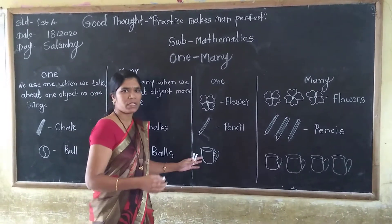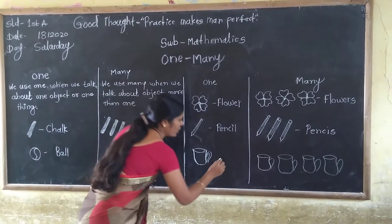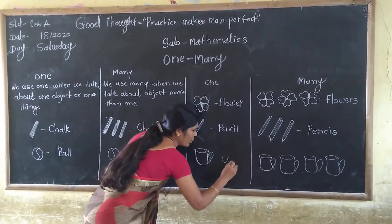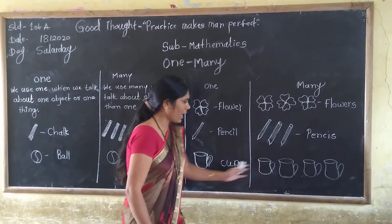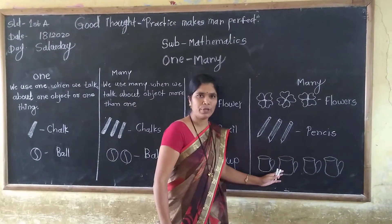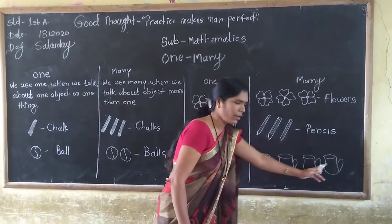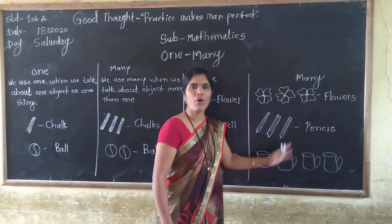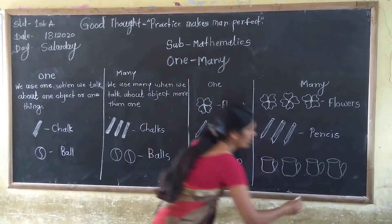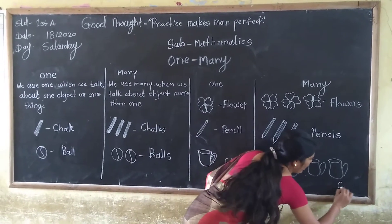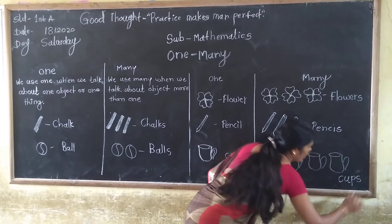This is a cup. This is only one cup. C-U-P. And count it: 1, 2, 3, 4. Those are 4 cups. We have right here — cups.